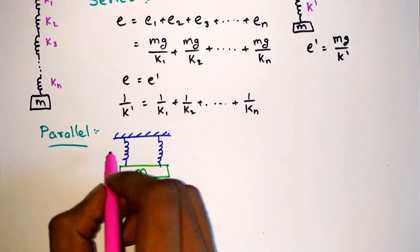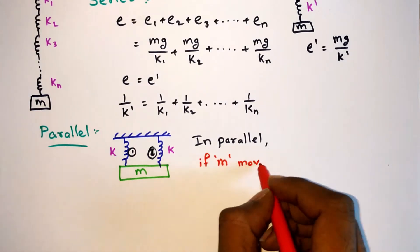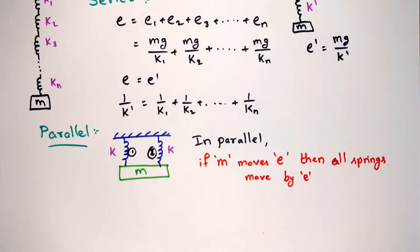Consider two springs connected to a mass M as shown. The thumb rule for parallel connection is if the mass M moves by a distance E, then the two springs in parallel will also elongate by E. So the overall elongation will be the same as the elongation of each spring.